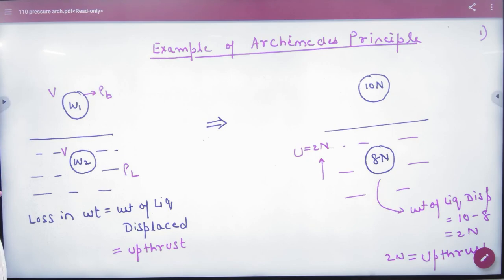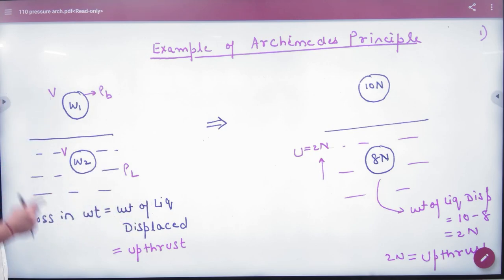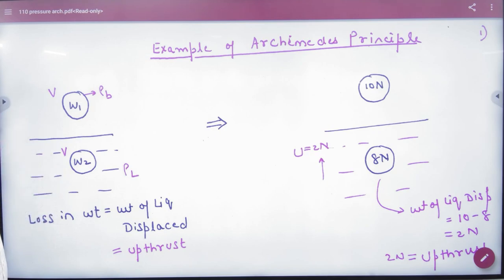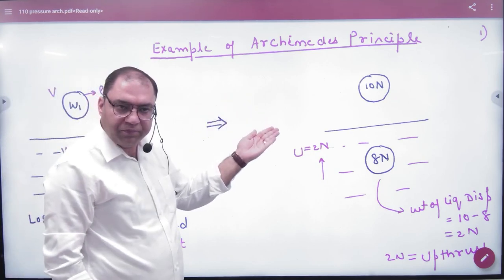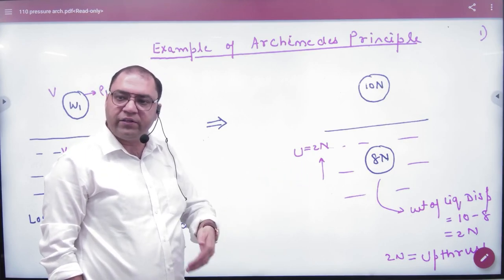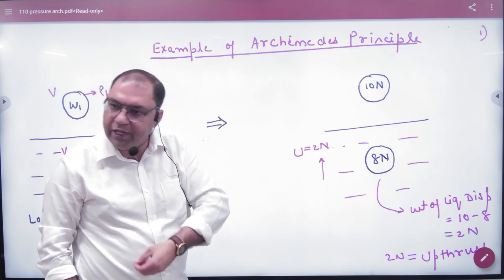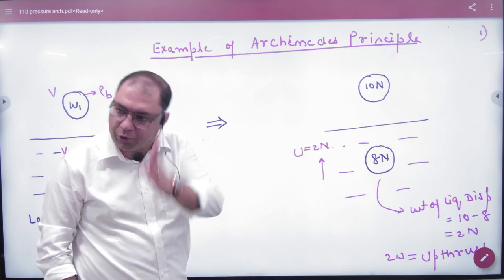Whatever the loss in weight, it equals the weight of the liquid displaced, which is also the upthrust — upthrust and weight of liquid displaced are one and the same thing. So the first rule is clear. For example, if body weight is 10N and liquid weight is 8N, then the loss in weight is 2N, the upthrust is 2N, and the weight of liquid displaced is 2N.